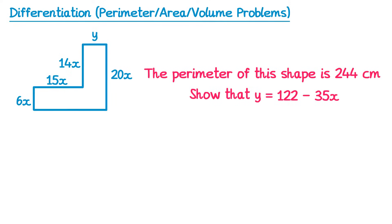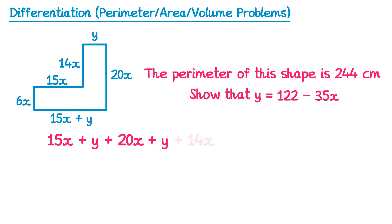If we're told the perimeter is 244 it makes sense to try and find an expression for the perimeter. To get the perimeter we need to add up all the lengths of the shape and we're missing just one of them — this one at the bottom — but we can work this one out; it would just be the same as these two lengths added together, so it's 15x add y. Now if we add up all of the sides of this shape we've got 15x add y, add 20x, add y, add 14x, add 15x, add 6x and this is the perimeter so it must add up to 244.